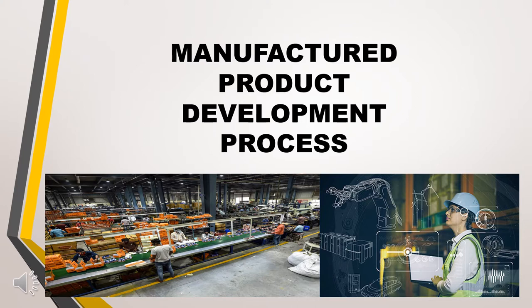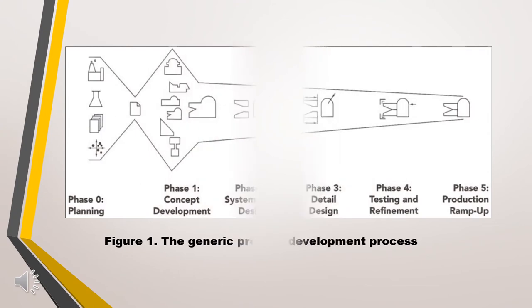Since we know that a product can be a service or an item, let us further discuss about the product development process — for manufactured products and service products. The generic product development process starts with Phase 0, the planning phase; Phase 1, concept development; Phase 2, system level design; Phase 3, detail design; Phase 4, testing and refinement; and the last phase, production ramp-up.